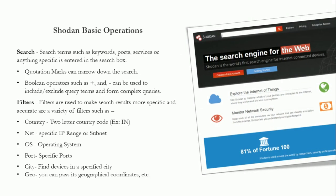Shodan Basic Operations — Search: Search terms such as keywords, ports, services, or anything specific are entered in the search box. Quotation marks can narrow down the search. Boolean operators such as plus, AND, and minus can be used to include or exclude query terms and form complex queries.